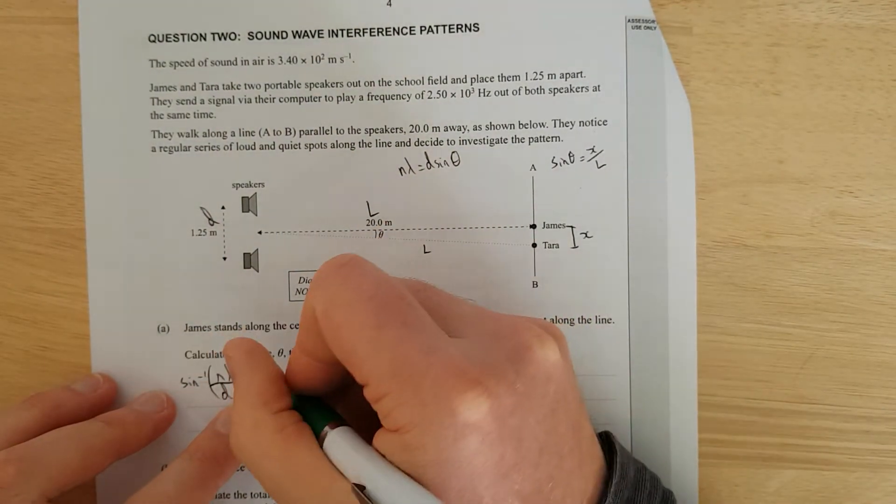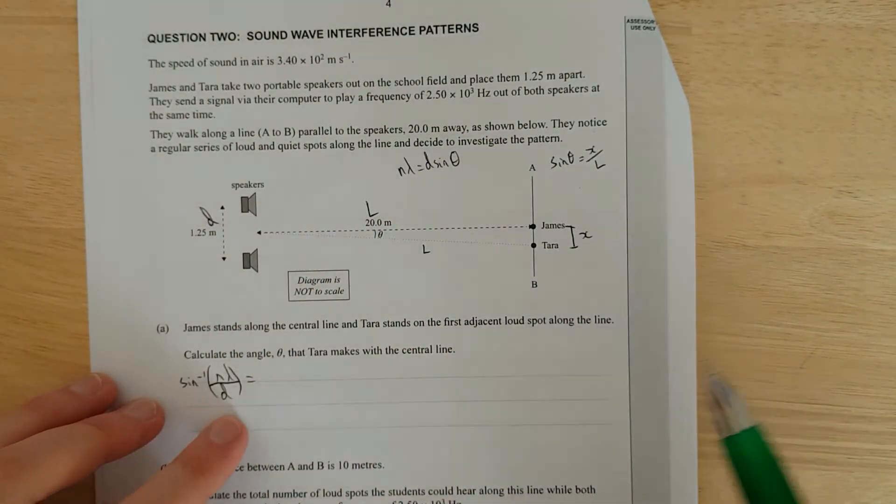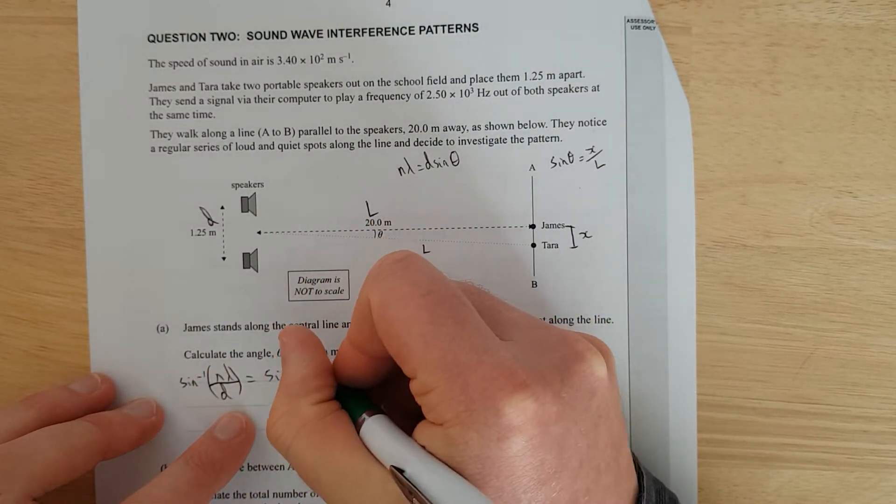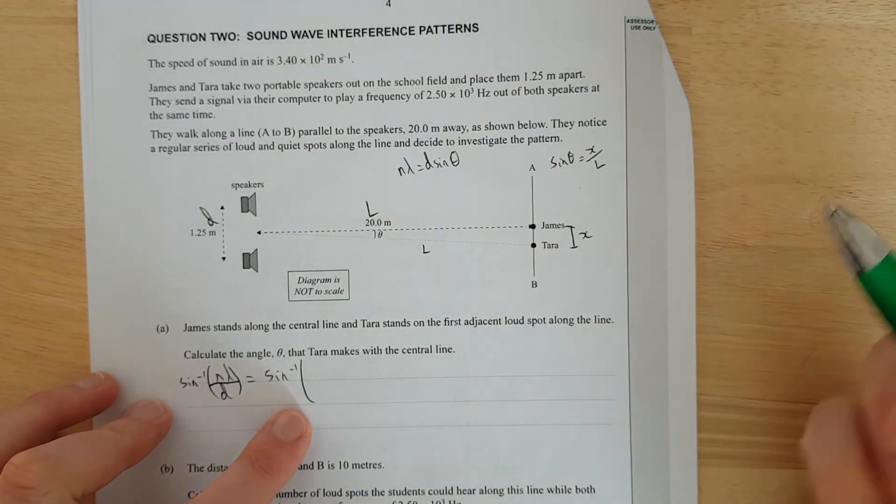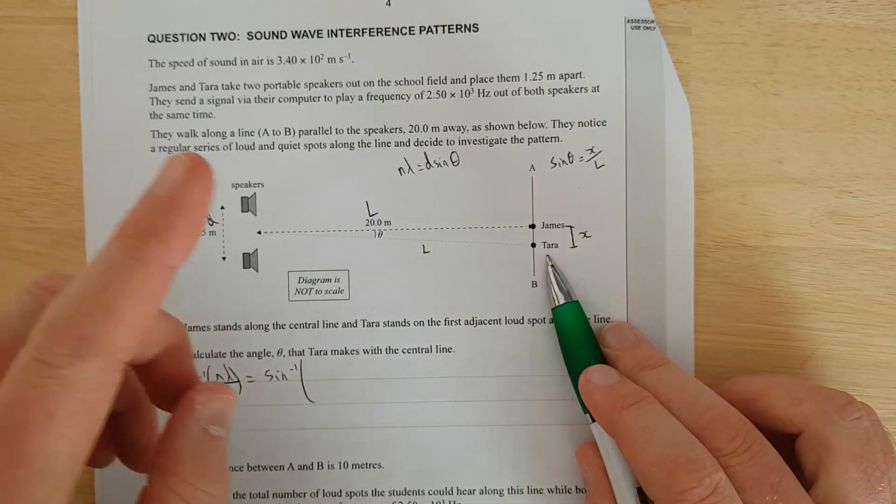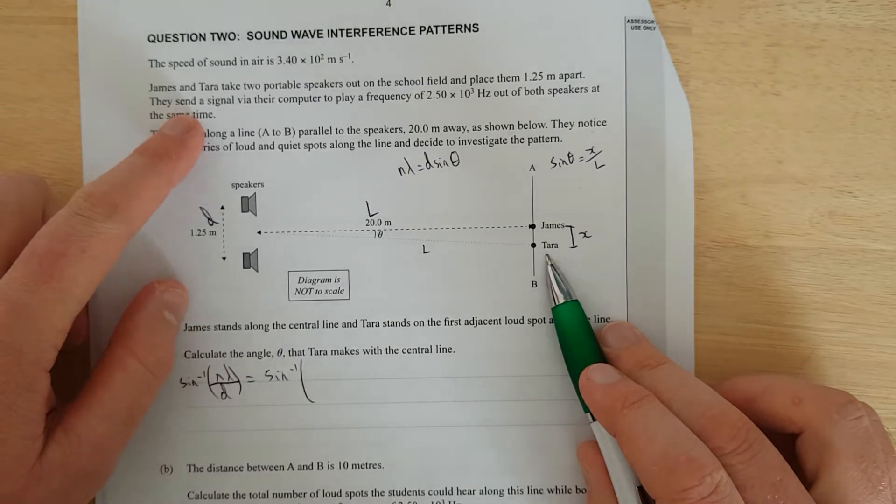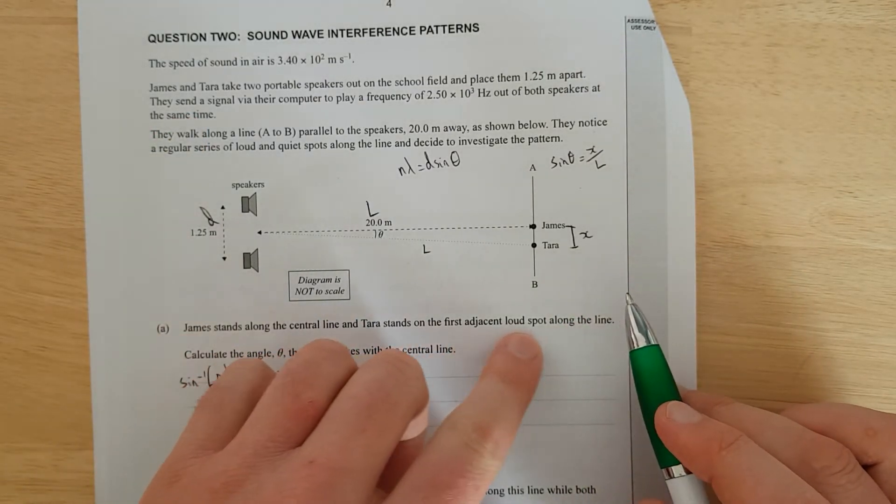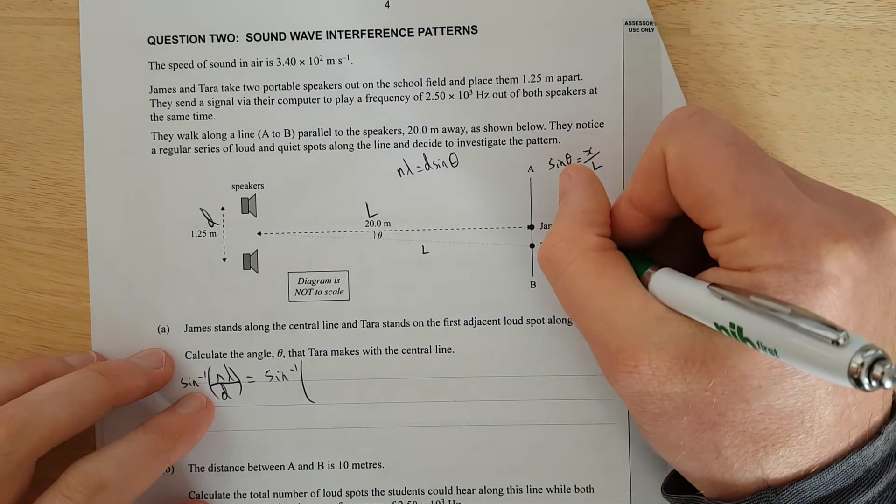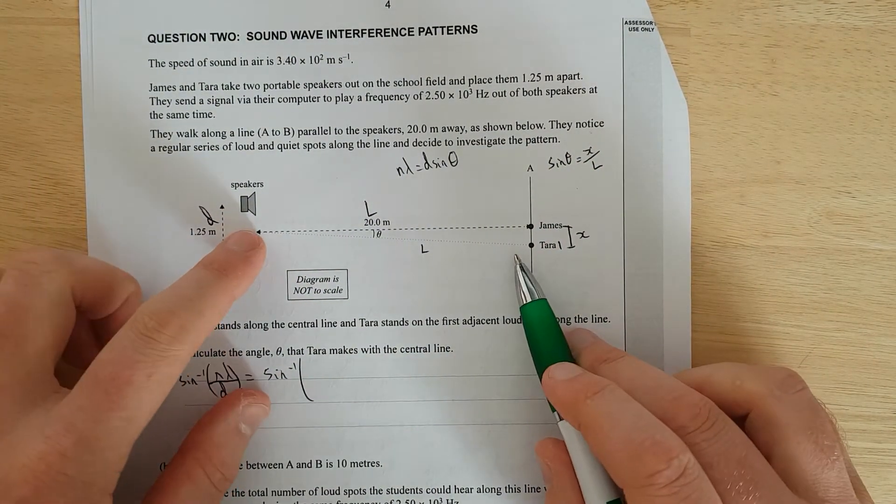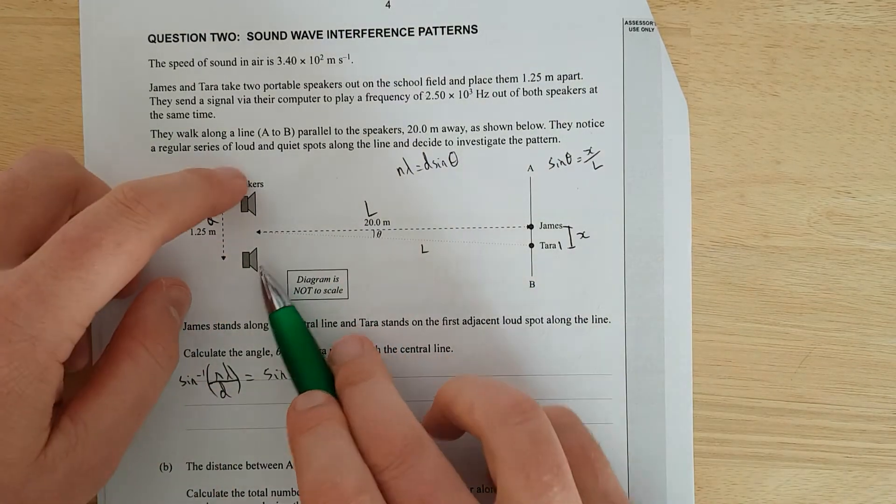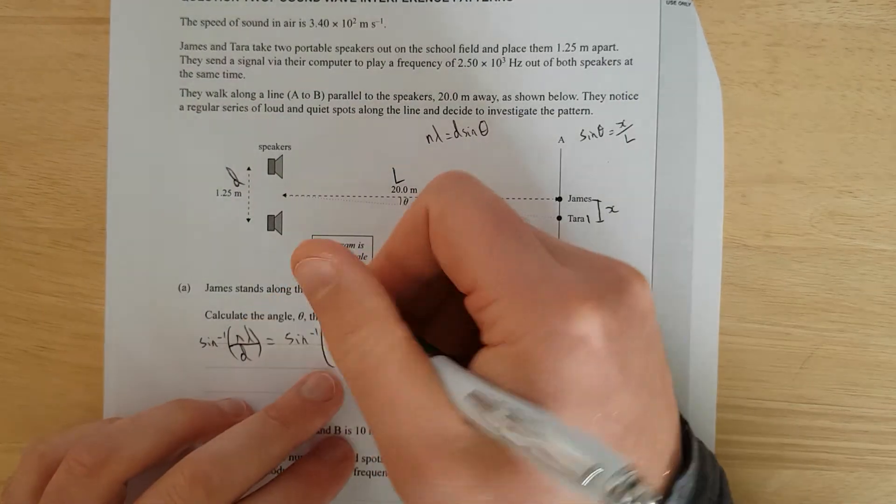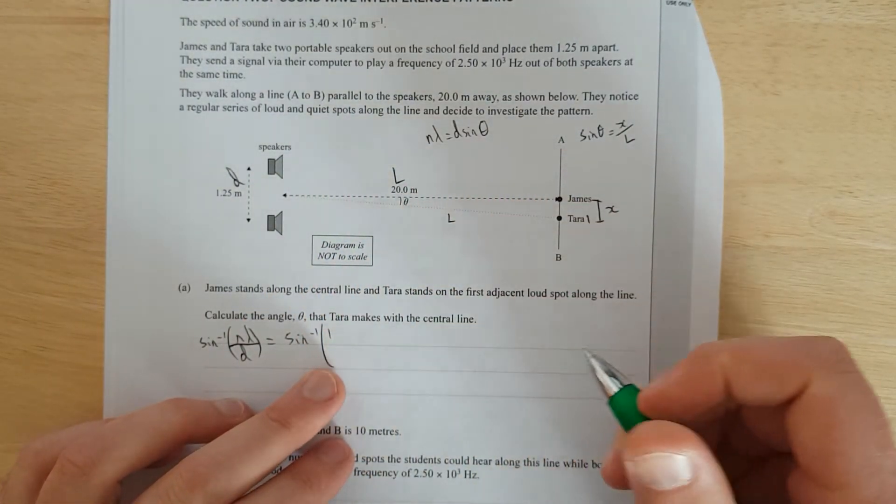Calculate the angle theta that Tara makes with the central line. So we're just going to rearrange this formula. N lambda over D would have equaled sine theta, but what's the opposite of sine? Opposite sine, it's called sine inverse. And that equals theta. Tara stands on the first adjacent loud spot, so she's at N equals 1. So we've got 1. What's the wavelength?